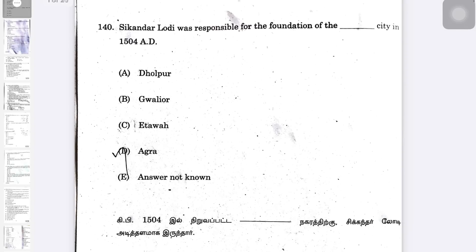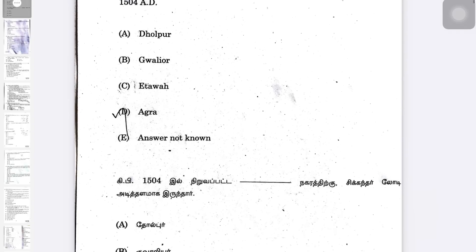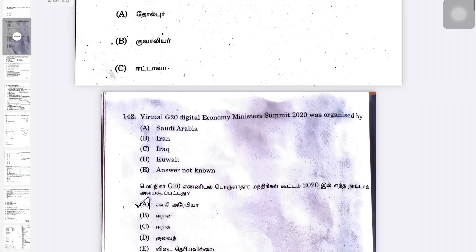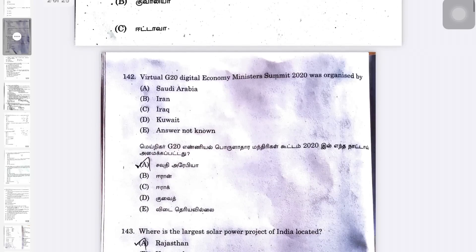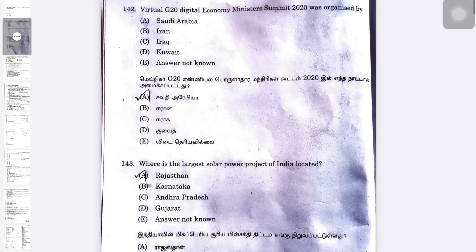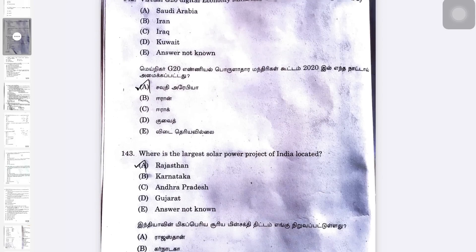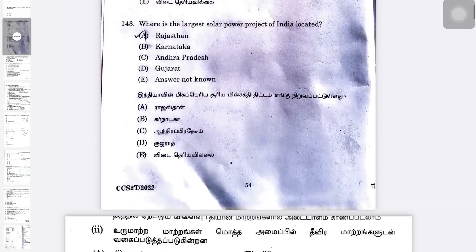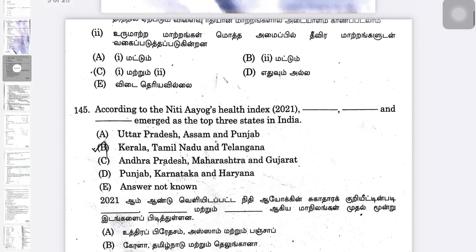Sikandar Lodi. Agra — Sikandar Lodi, Mainagar, G20, Saudi Arabia. Largest solar power project: Rajasthan. Nittiyaya Health Index: CARE.